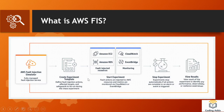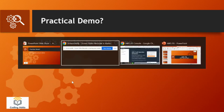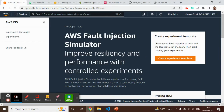In the FIS service we need to create some experiments. In that experiment we need to define what all the actions are — what we need to do. We also need to define some targets, which are the AWS services like EC2 or RDS. Once the experiment template is ready, we run the experiment and monitor the results from CloudWatch.